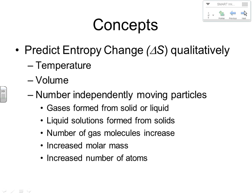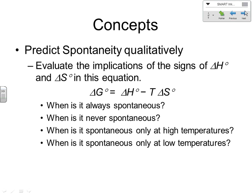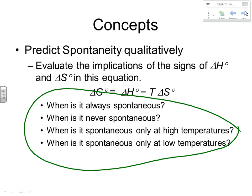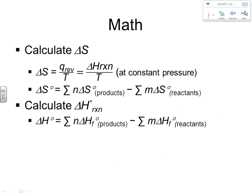Also, be able to predict entropy change qualitatively, not just with quantity, but look at what happens with temperature and volume, and the number of independently moving particles and all the different situations that that can entail, where we looked at how entropy can change and be able to predict it in a qualitative way. Really important idea because there's a number of questions dealing with qualitative interpretations of entropy in different reactions. Also, be able to predict spontaneity qualitatively, and that's really looking at your sign convention. What does it mean to have a positive or negative ΔH and ΔS? Understand these things very thoroughly. This needs to be intuitive, so don't shortchange that. You need to look closely at that.